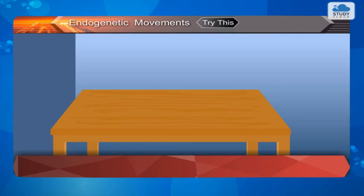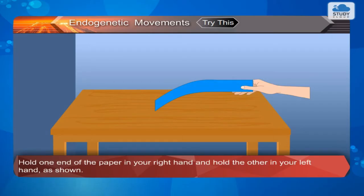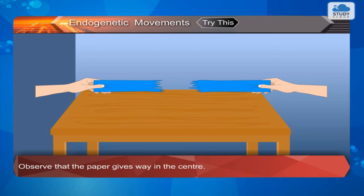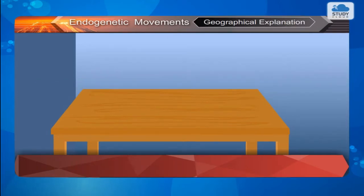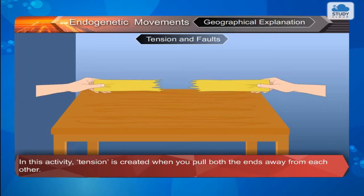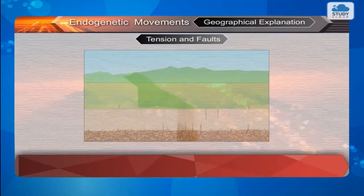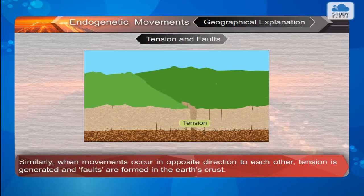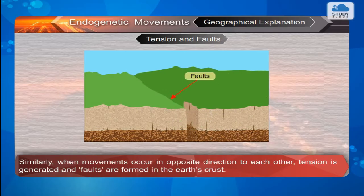Try this. Take a long strip of thin paper. Hold one end in your right hand and the other in your left hand as shown. Pull both ends away from each other. Observe that the paper gives way in the center. Geographical explanation — Tension and Faults: Tension is created when you pull both ends away from each other. Similarly, when movements occur in opposite directions, tension is generated and faults are formed in the earth's crust.